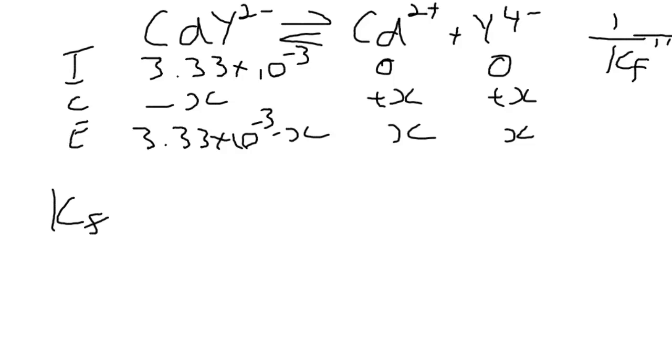Now to get this K formation double primed, what we do is we have to account for the fact that not all the EDTA is going to be in the right form to complex, and also in this case there's ammonia present which can complex with the cadmium. So we take the formation constant which we can look up. We multiply it by the fraction of EDTA in the form of EDTA 4-. Again we can look that up. It depends on the pH. And the fraction of cadmium present as free cadmium ions, which depends on the amount of ammonia because ammonia can also complex with the cadmium. And that ends up giving us a K double primed value.